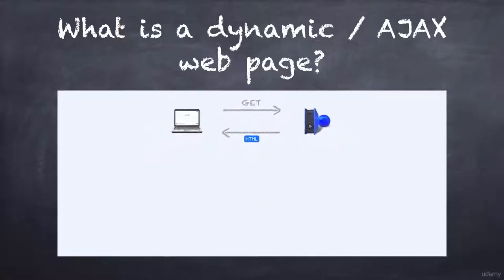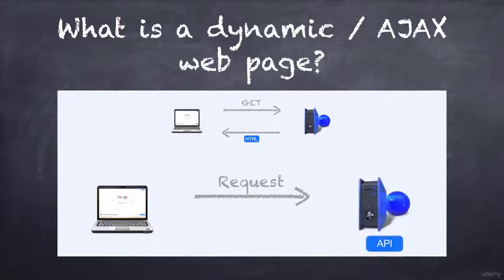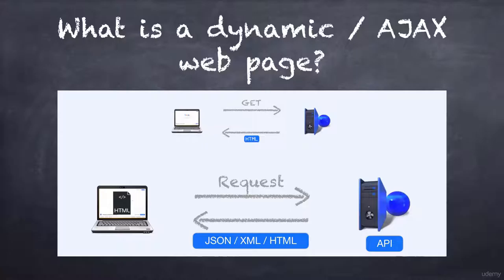Now when your browser executes the JavaScript code, there are typically one or more requests sent to the server API, which responds with either JSON, XML, or HTML snippets. These are then processed by the JavaScript client code and affect the HTML of the site.